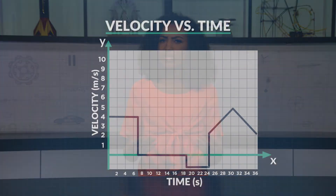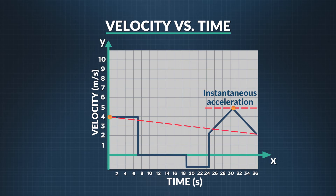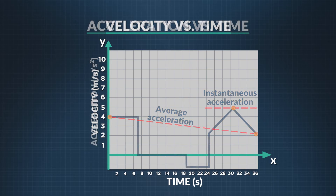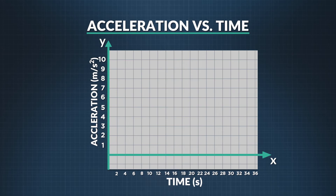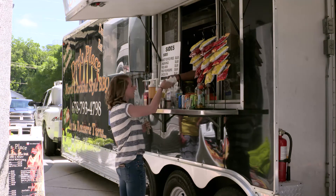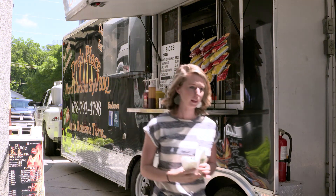The method is exactly the same. For instantaneous acceleration, draw a line tangent to that moment in time on the graph line and find the slope of it. For average acceleration, draw a line connecting your time interval and find the slope of it. There's one more kind of graph we haven't shown you, and that's acceleration versus time. Let's take a look at an example of that using Summer and her sandwich.